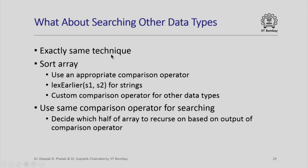What about searching other data types? The techniques are essentially the same. You first sort the array using an appropriate comparison operator — for strings, we used a lexicographic comparison function earlier; for other data types, you may need a custom comparison operator. Once sorted, you use the same comparison operator in binary search to decide which half to recurse on.